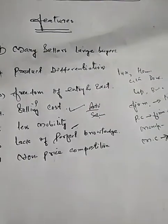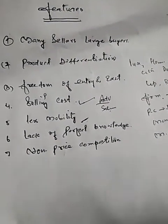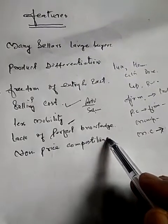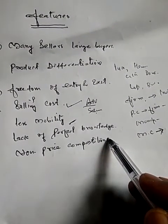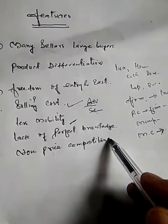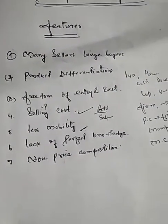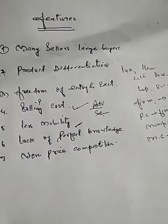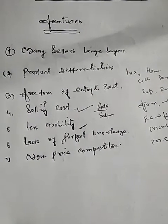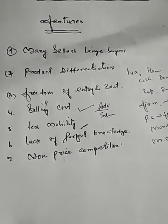Another feature is imperfect knowledge. Sellers, buyers, and owners of factors of production do not have perfect knowledge about the prices of products and factor services. This is because, due to product differentiation, it is not possible to directly compare the prices being paid by different firms for the services of factors of production.